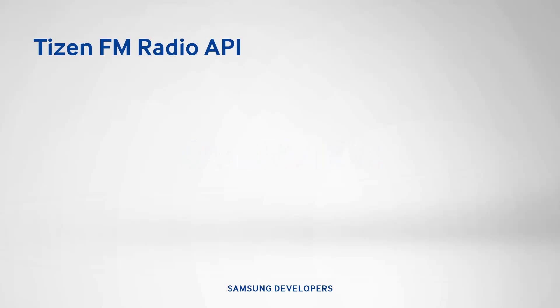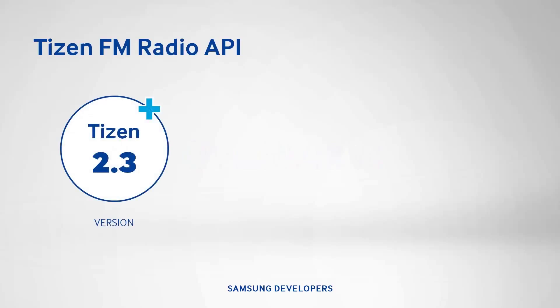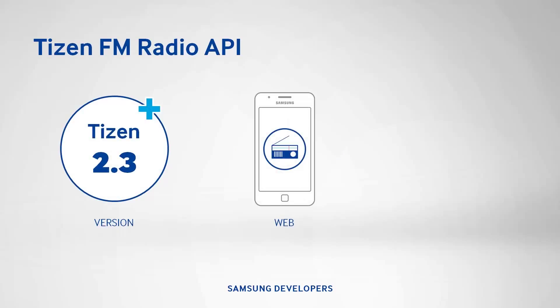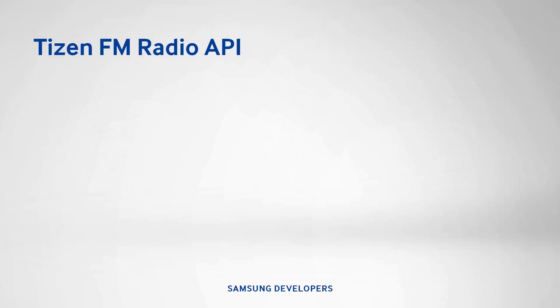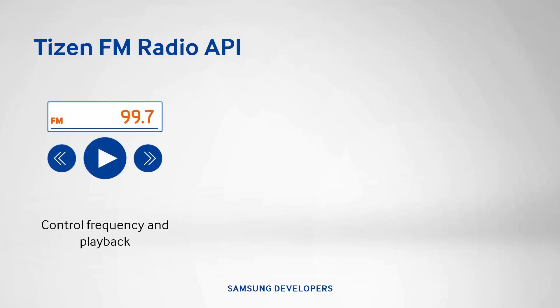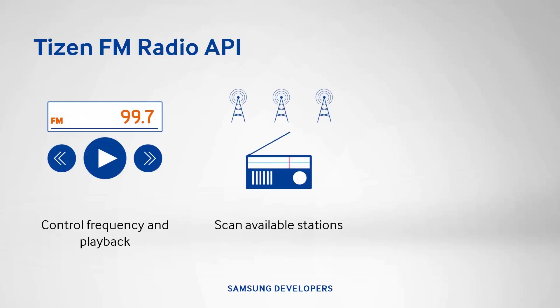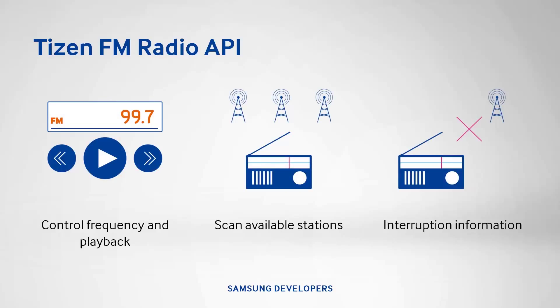The FM radio API provides interfaces for accessing the FM radio. It was introduced in Tizen version 2.3 and provides the same functionality for both web and native apps. In our tutorial, we'll be using web apps to control the radio as the code is simpler to understand. With the FM radio API, you can control playback by starting and stopping it, scan for available FM stations, and get interruption information so your app can handle notifications.